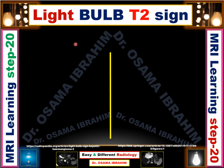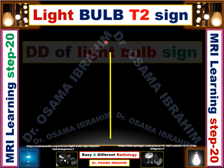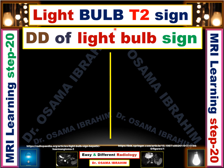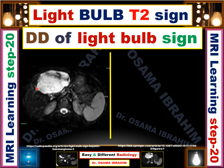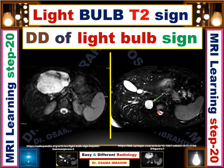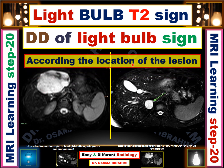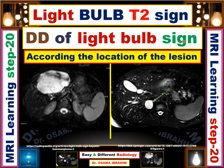The most important slide in this presentation is the differential diagnosis of the light bulb sign. If I find the light bulb sign in heavily T2 or even in the original T2 in MRI, what are the suspected diagnoses? For example, this lesion shows a high signal in the heavily T2 — the background appears dark and the CSF appears bright. This is the gallbladder, and these are two lesions in two different patients showing light bulb signs. The differential diagnosis is determined according to the location of the lesion.